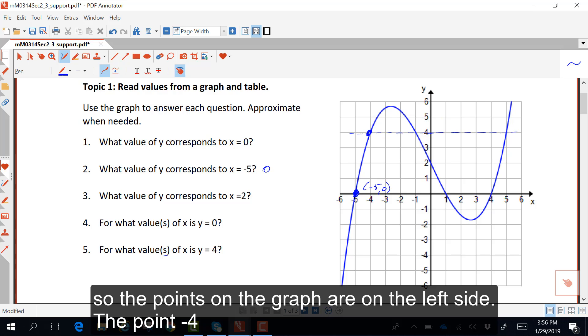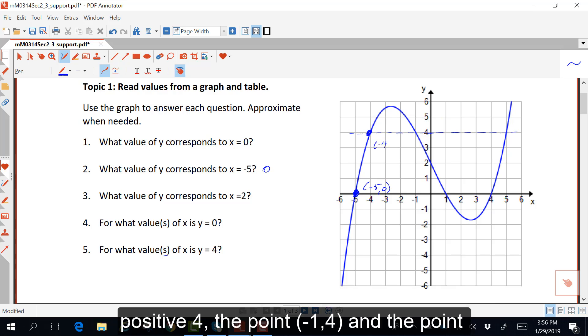So the points on the graph are on the left side, the point negative 4, positive 4, the point negative 1, positive 4, and the point 5, positive 4.